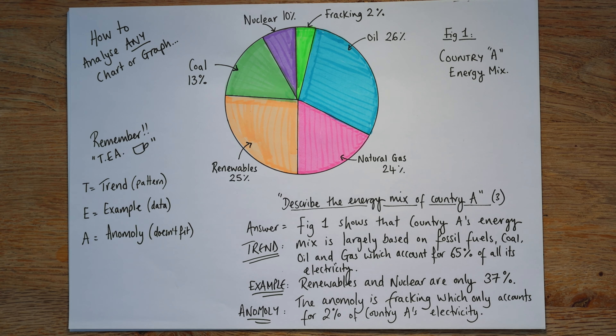Now we need to practice this Trend, Example, Anomaly approach with any graph. Just Google it — Google 'geography graph' — and then practice it again and again, because it needs to be so automatic in your exams that it's just easy. So I hope that's helpful. Just a little technique that lots of geography teachers use in the classroom to help students get through exams. Nice quick one for you. Thanks.